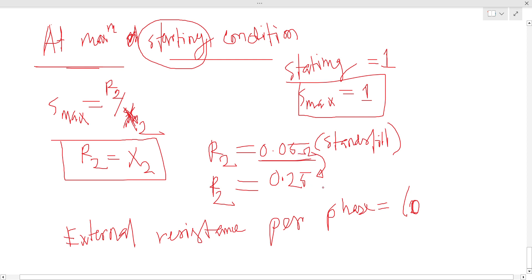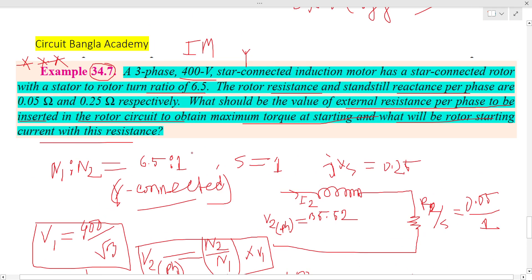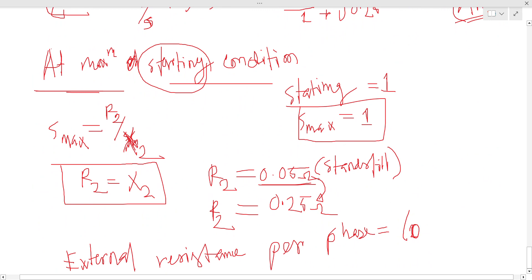The maximum rotor resistance required is 0.25 ohm. The external resistance to insert per phase into the rotor circuit to achieve maximum torque at starting is: 0.25 minus 0.05 equals 0.2 ohm.